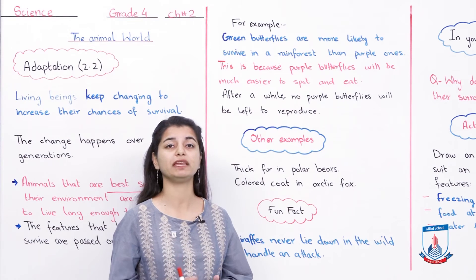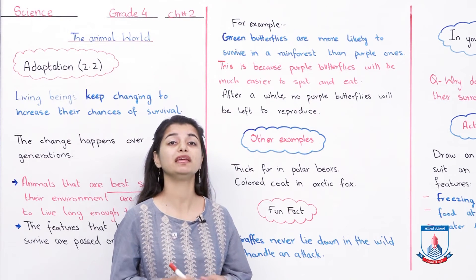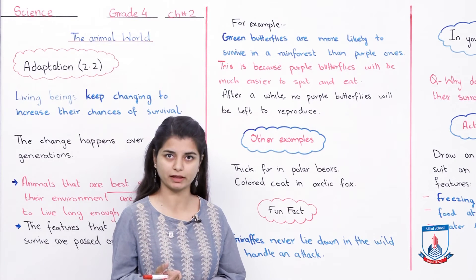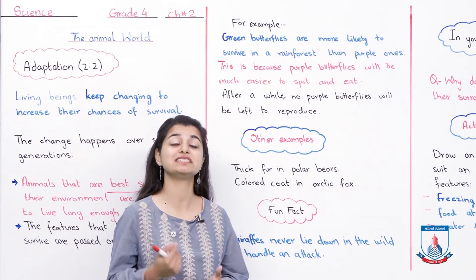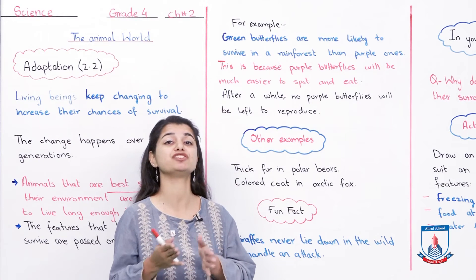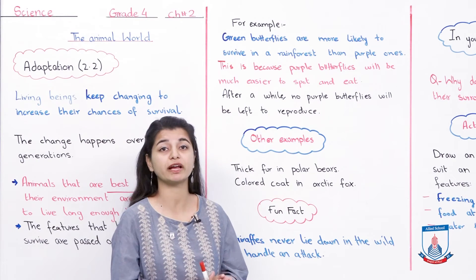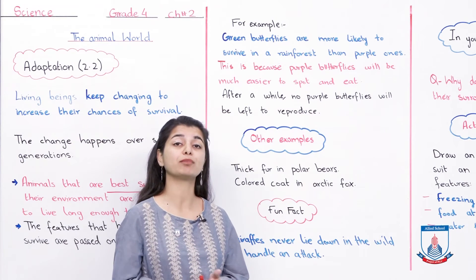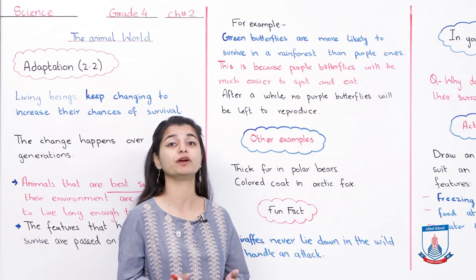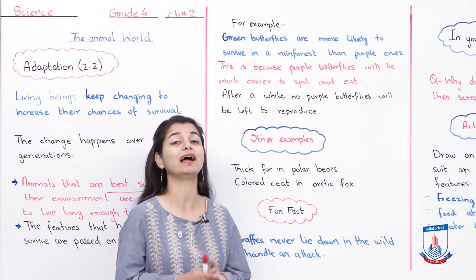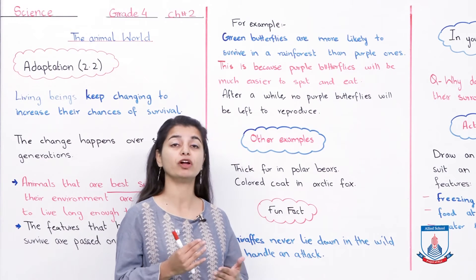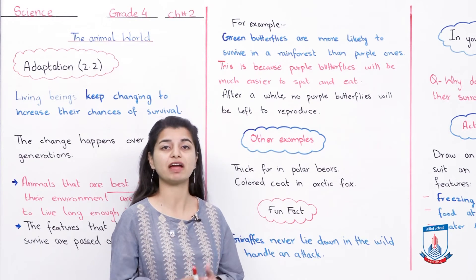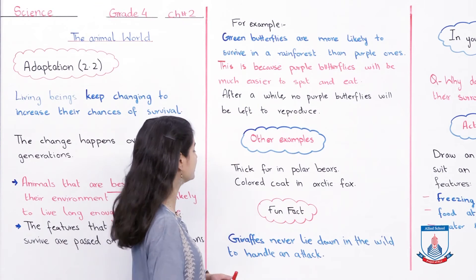Another example not in the book is the chameleon. The chameleon changes its color to match its environment — if it is on a green leaf it turns green, if there is an orange leaf it turns orange. The reason is to protect itself: if a predator or attacking animal comes, they cannot find it. This is also an adaptation feature that helps it survive in different environments.